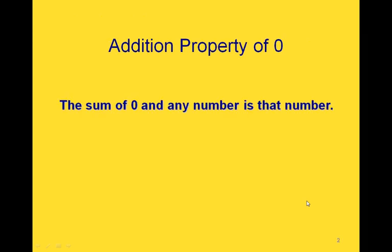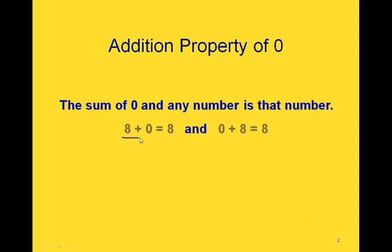In this video we're going to talk about several different properties of addition and subtraction. The first one is the addition property of 0, and this just says that the sum of 0 and any number is that number. So for example, 8 plus 0 equals 8, and 0 plus 8 equals 8.